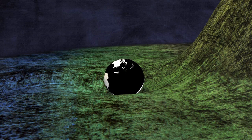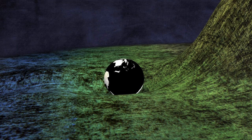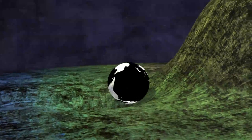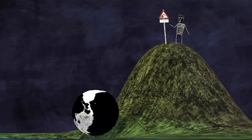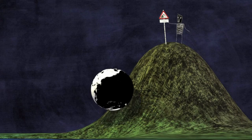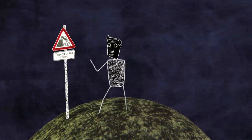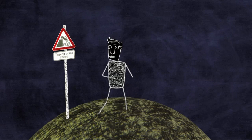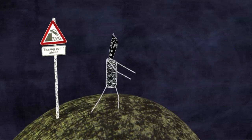The problem is that our use of fossil fuels is pushing us further and further out of our little stable dip and up the far slope of this hill. The tipping point is the point at which we cross the peak of the hill and we no longer need to keep pushing to keep the planet moving towards a much hotter place.